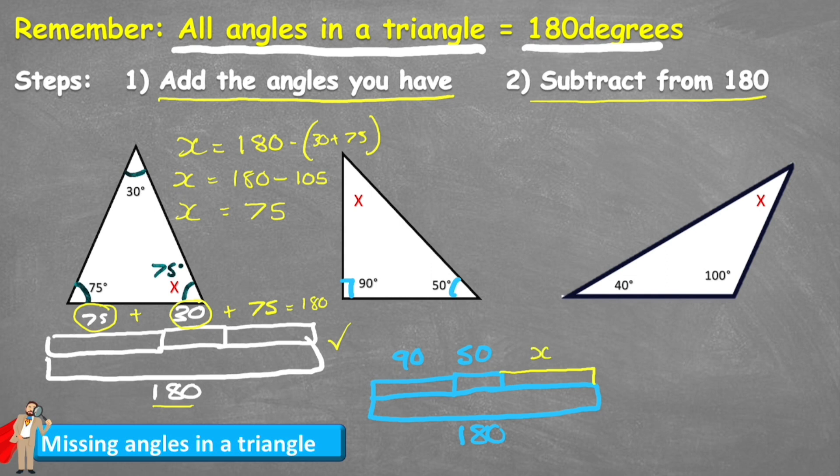So again let's use some algebra to help us. I'm going to start with X equals 180 subtract the sum of 90 and 50. So therefore X equals 180 minus 90 plus 50 which in this case is 140. Therefore X equals 40. So the value of this angle is 40 degrees.